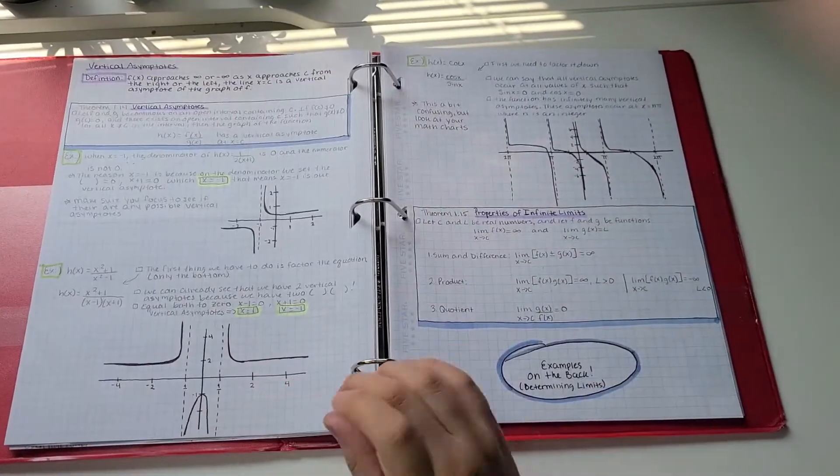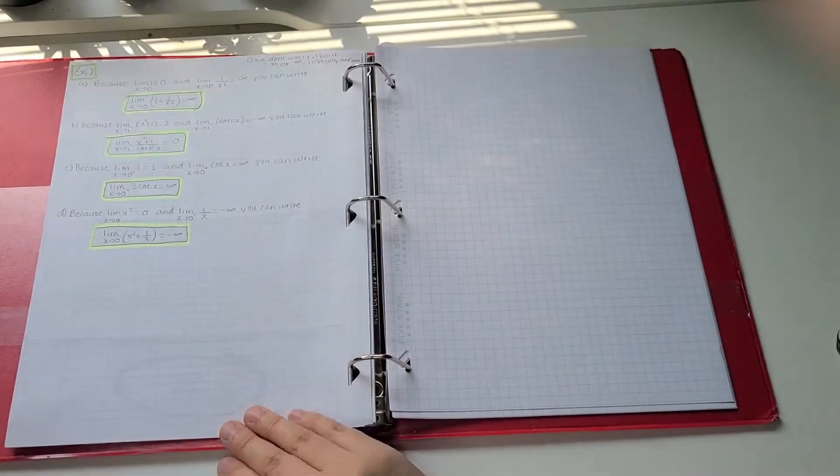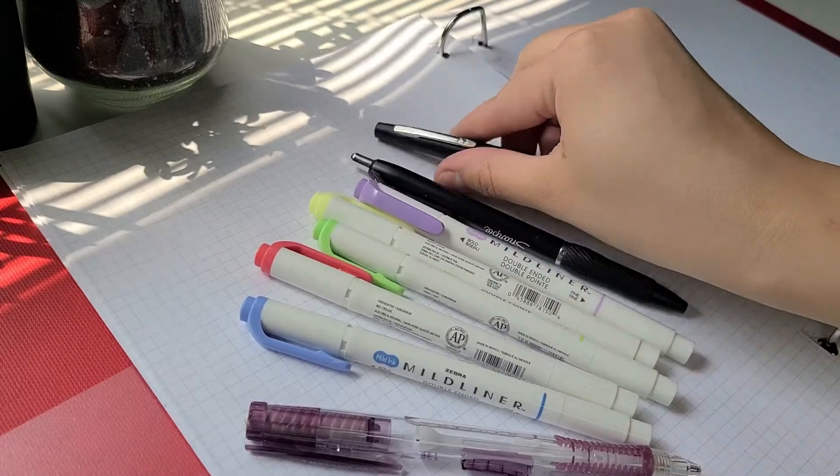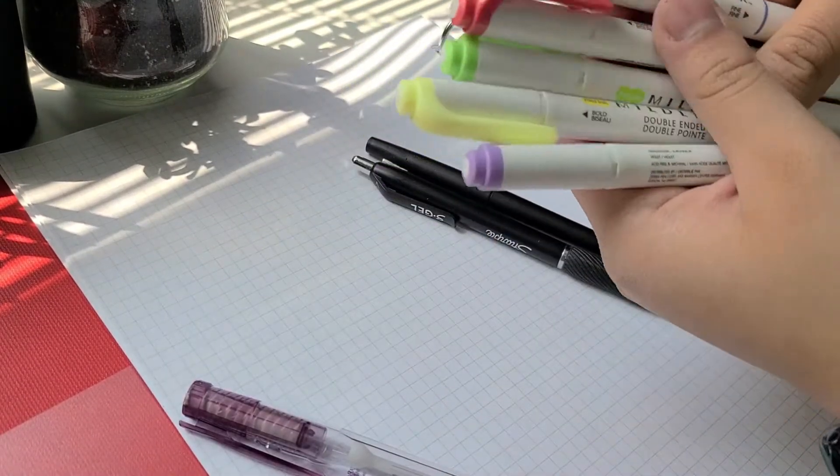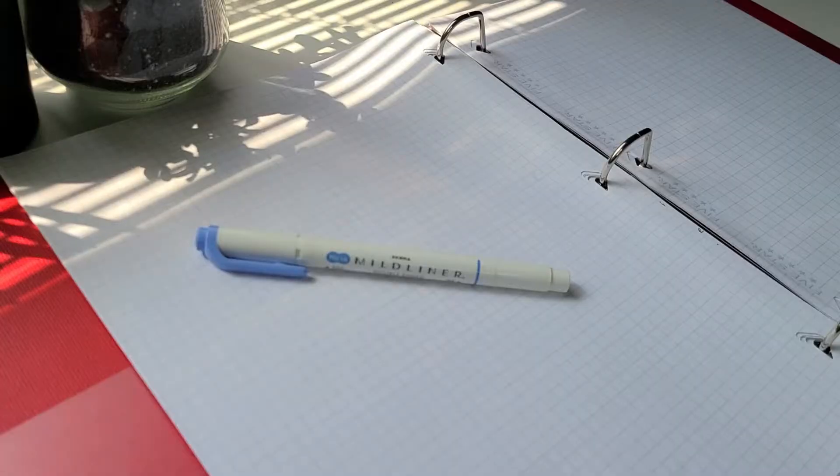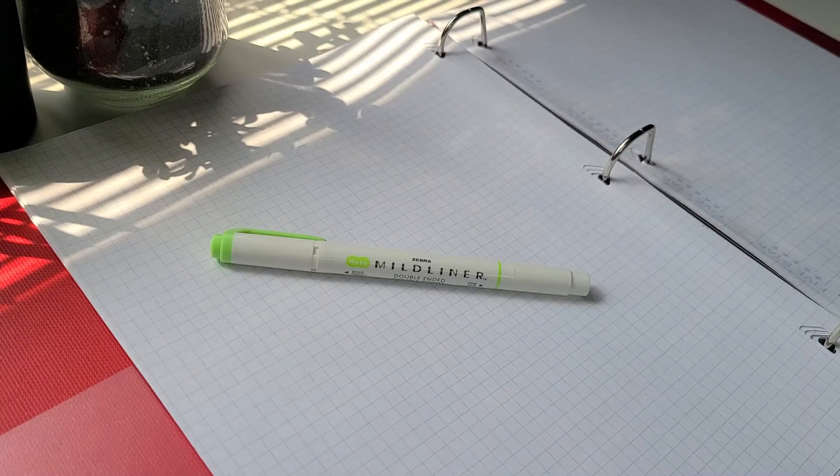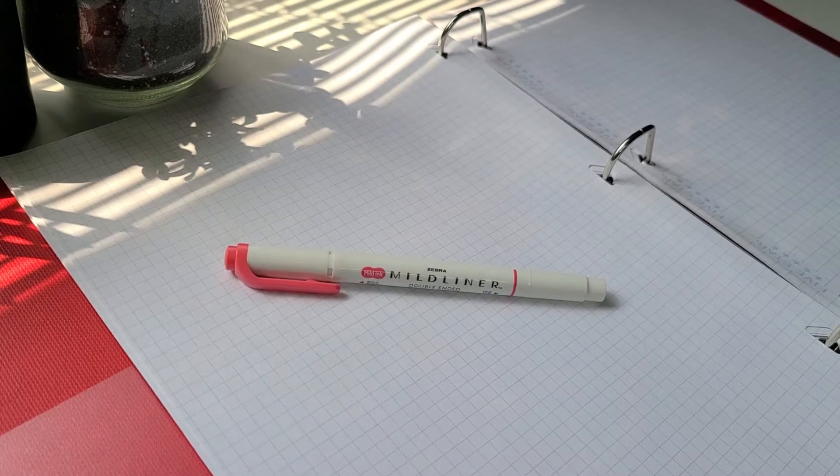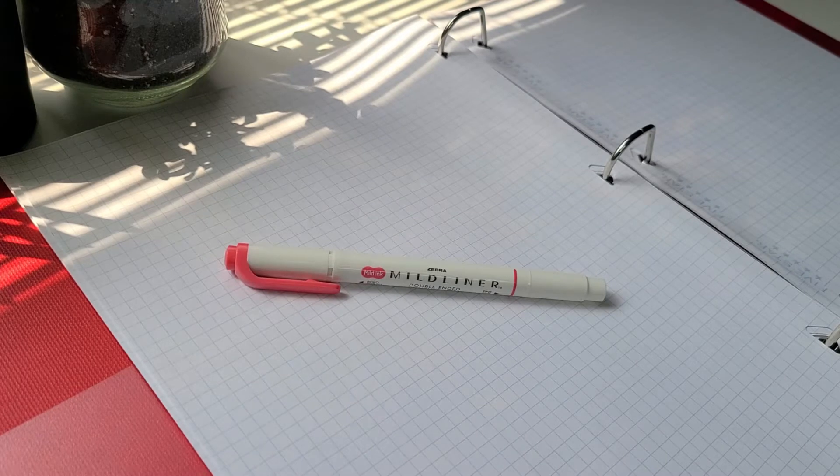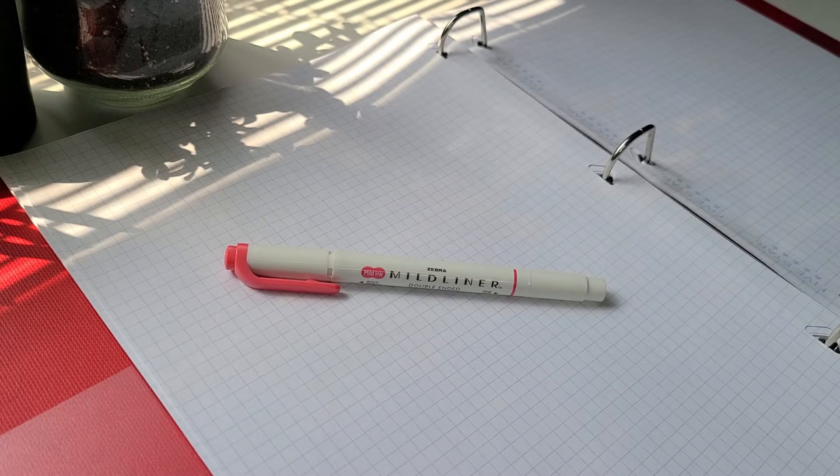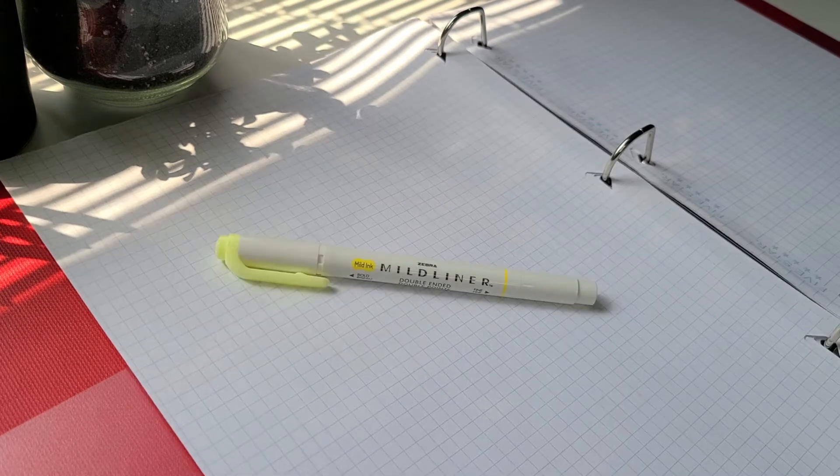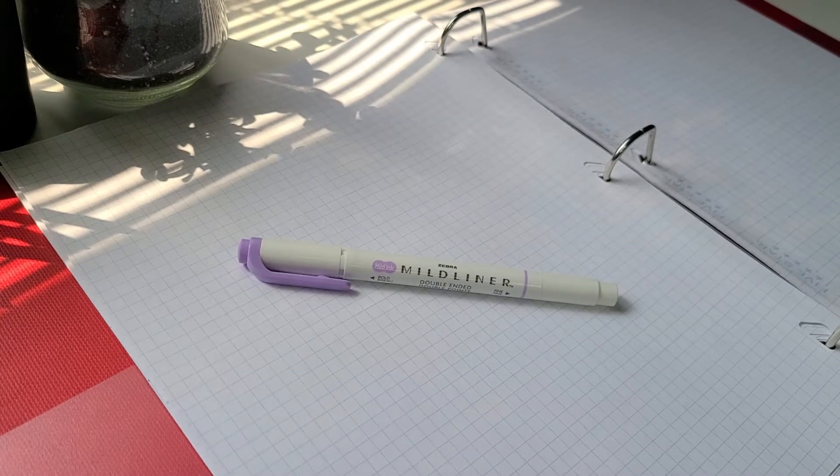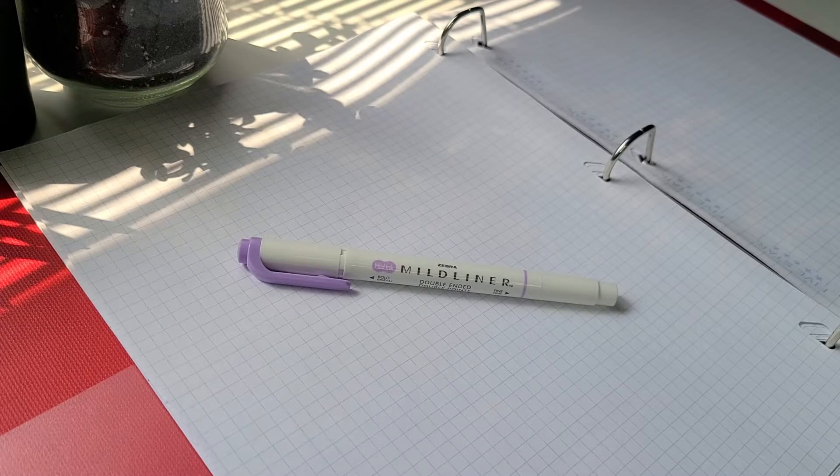So now for the supplies I use to take my math notes, I do use a lot of supplies here but I'm mostly in love with my Mildliners, and each color represents each category. Blue is for highlighting my boxes, green is for highlighting my examples such as example problems, red would be for highlighting my titles and sections, yellow would be highlighting my answers of each problem which would help me a lot, and purple is for highlighting subtitles and vocabulary words.